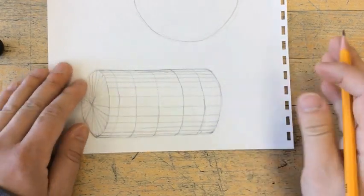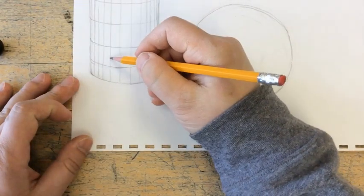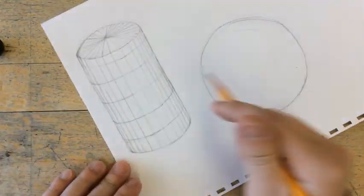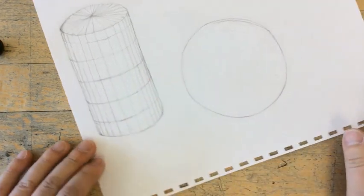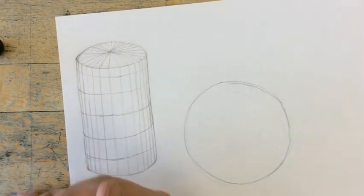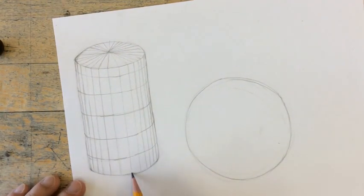All right, so this is it. I finished my drawing, I go back in, clean the marks that I don't want, restate the lines that I do need and I'm done. Stay tuned to the next video, how to create cross contours on a sphere.